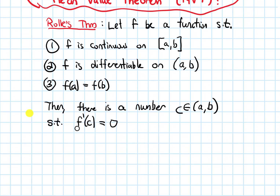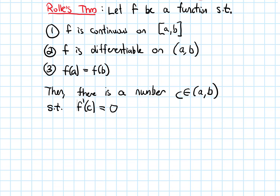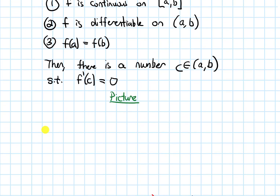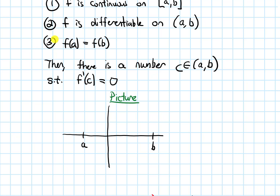I want to give an intuitive reason for why this might be true using a picture. I'm going to draw a picture of a function that satisfies these conditions. I'll draw some axes and label a point a and a point b on the x-axis. The outputs at a and at b need to be the same — that's what the third condition says.